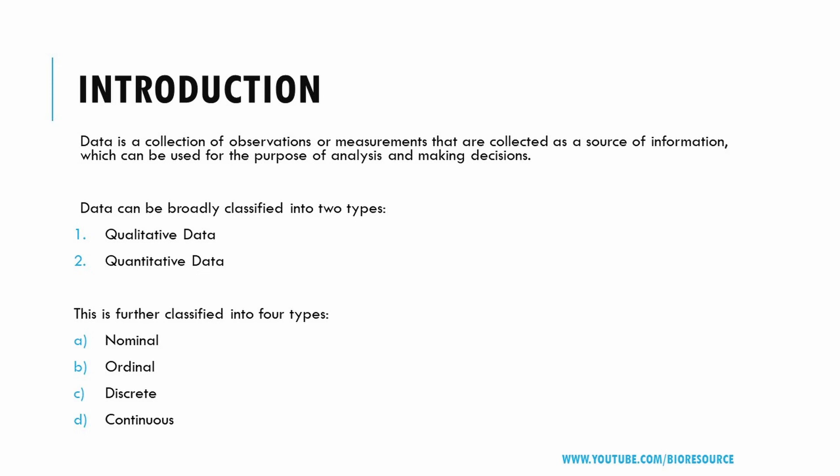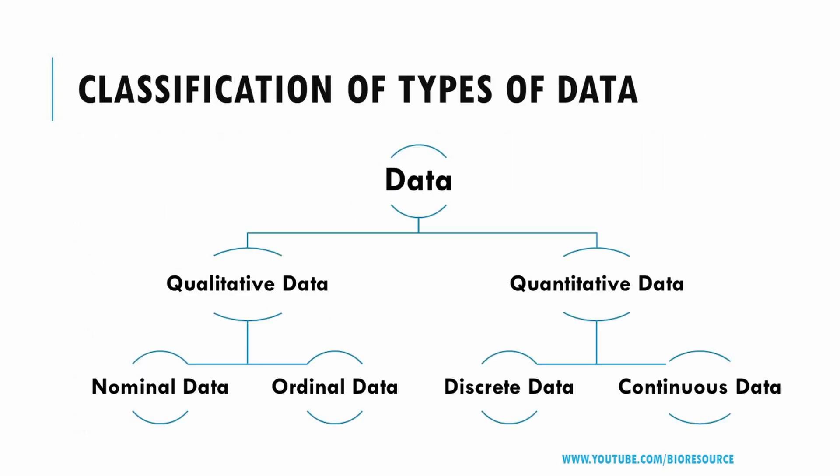Statistical data can be broadly classified into qualitative data and quantitative data, and this can further be classified into four types: nominal data, ordinal data, discrete data, and continuous data.